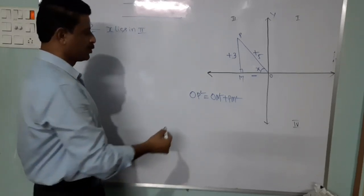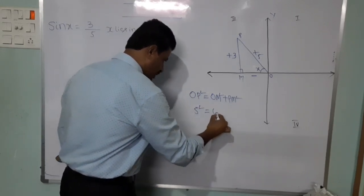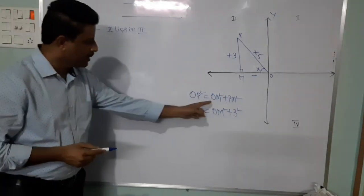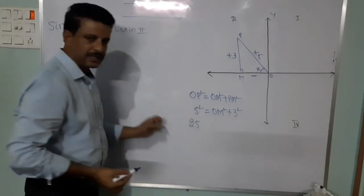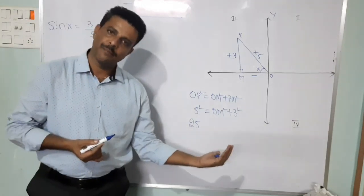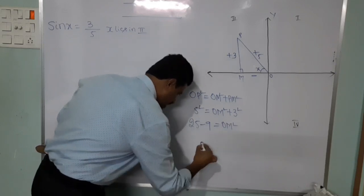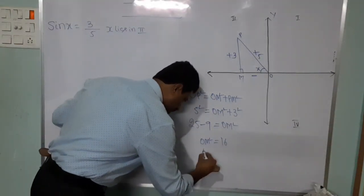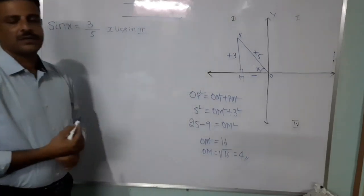Substitute the values: 5 square equals OM square plus 3 square. So 25 equals OM square plus 9. Bring 9 to the other side: OM square equals 25 minus 9 equals 16. Therefore OM equals root 16, and the value of root 16 is 4.